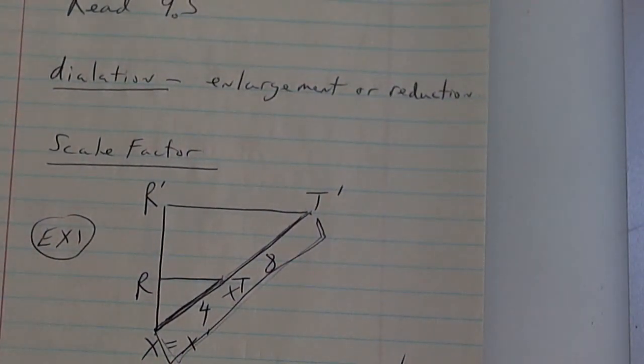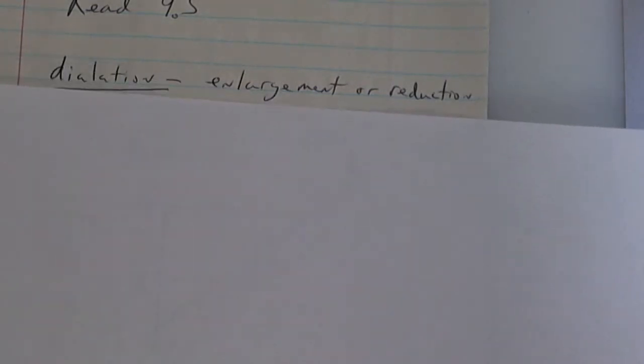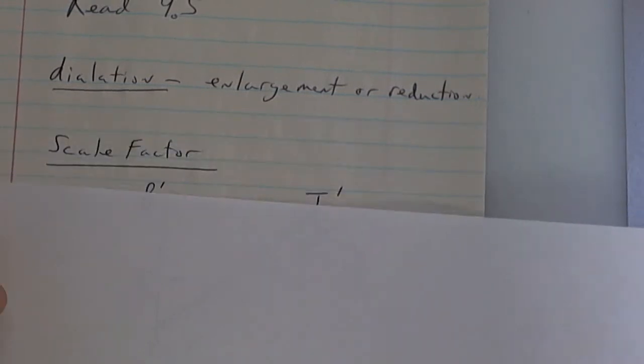A dilation is a transformation but it can be either an enlargement or reduction. If someone shines a flashlight in your eye, your pupil reduces to restrict the amount of light coming in. That is a dilation.